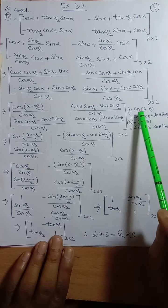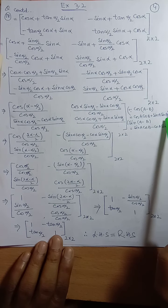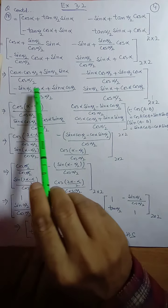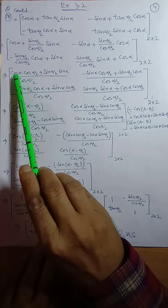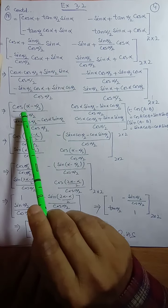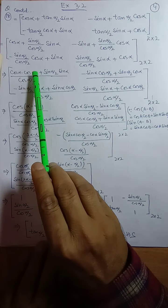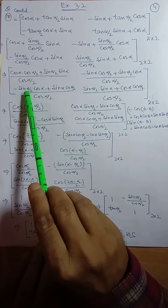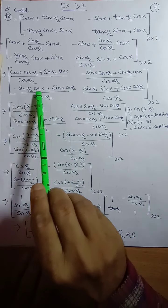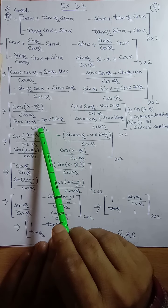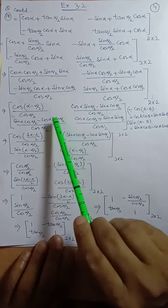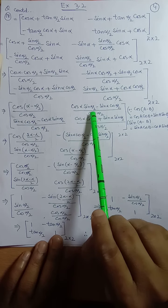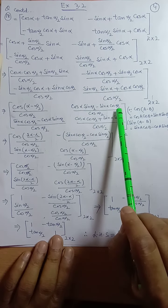We use the formulas: cos(A minus B) equals cos A cos B plus sin A sin B, and sin(A minus B) equals sin A cos B minus cos A sin B. Applying these, cos A cos B plus sin A sin B gives cos(A minus B), where A is alpha and B is alpha/2. Similarly, sin(alpha) cos(alpha/2) minus cos(alpha) sin(alpha/2) gives sin(alpha minus alpha/2).